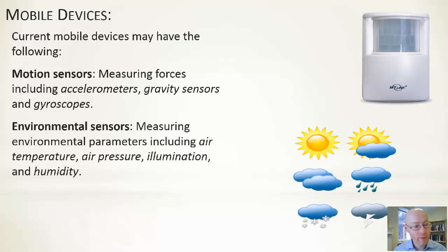It can include environmental sensors. Things here would be the air temperature, maybe the air pressure, things like the height, the amount of illumination, how bright or dark it is, the humidity in the air. These are other measurable elements that phones or tablets can pick up on.